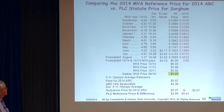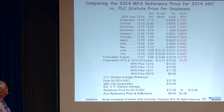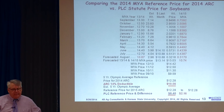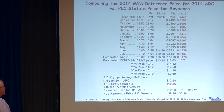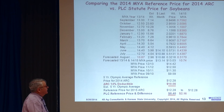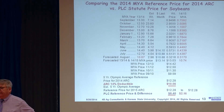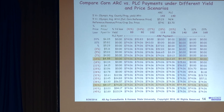Here are the soybean numbers. On soybeans, you've got to get a price below $8.40 to trigger the PLC payment, and we're quite a ways from $8.40. So the program most likely to pay on soybeans is the ARC program, based on current analysis.